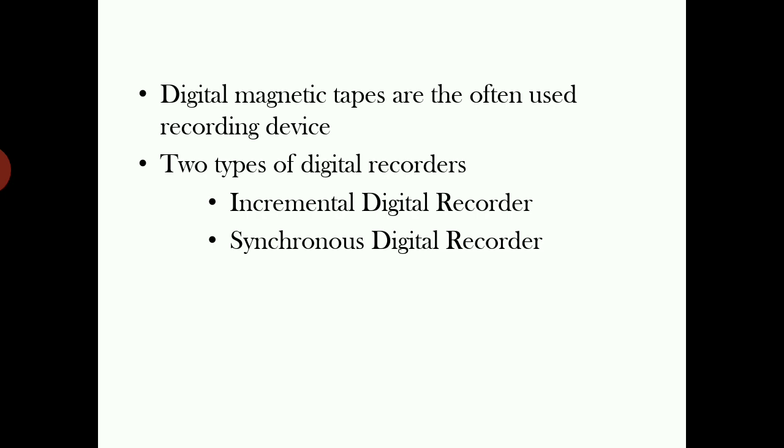The commonly used recording device are magnetic tapes. The two types of digital recorders are incremental digital recorder and synchronous digital recorder. These two are different on the basis of motion of the magnetic tape when data is fed into it.